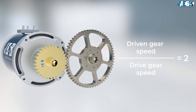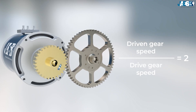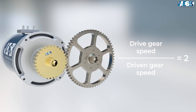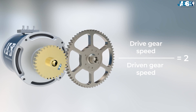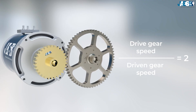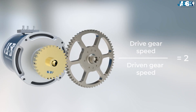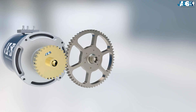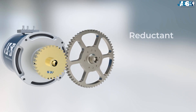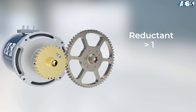If we want to derive the gear ratio from the pace, we must invert the mathematical ratio — that is, we must consider the speed of the drive gear and divide it by that of the driven gear. Therefore, if the gear ratio is greater than 1, it can be defined as reductant and, consequently, the whole gear would be called a reduction drive.